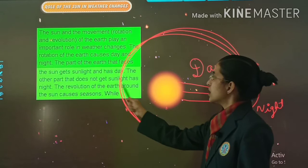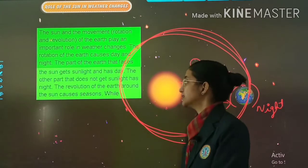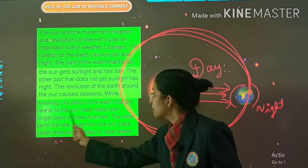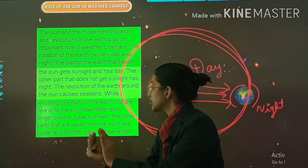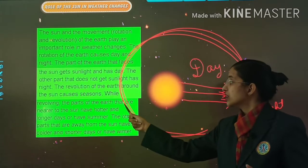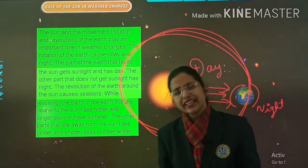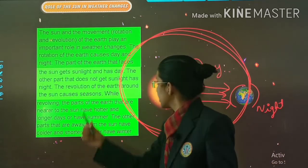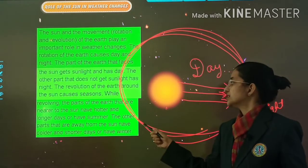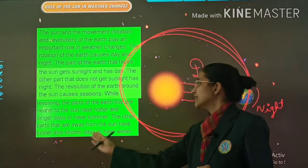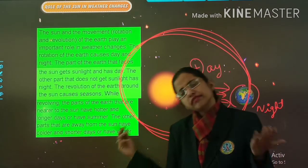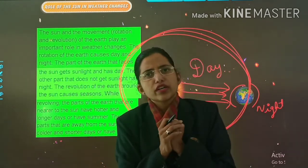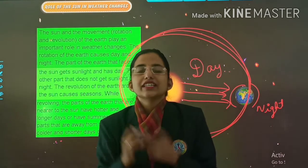The revolution of the earth around the sun causes seasons. The parts of the earth that are nearer to the sun have hotter and longer days — they have summer. Very simple: if the earth is close to the sun, then there are hotter days. The other parts that are away from the sun have colder and shorter days — they have winter.